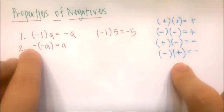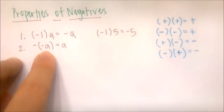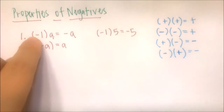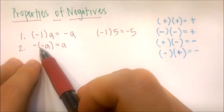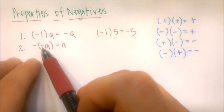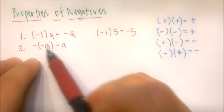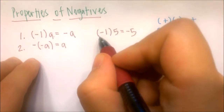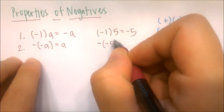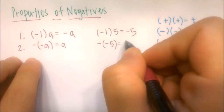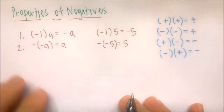If we have negative times negative a, we can look at that negative like it's a negative 1. So negative 1 times negative 1 is positive 1, and 1 times a is just a. For example, negative negative 5 is just 5.